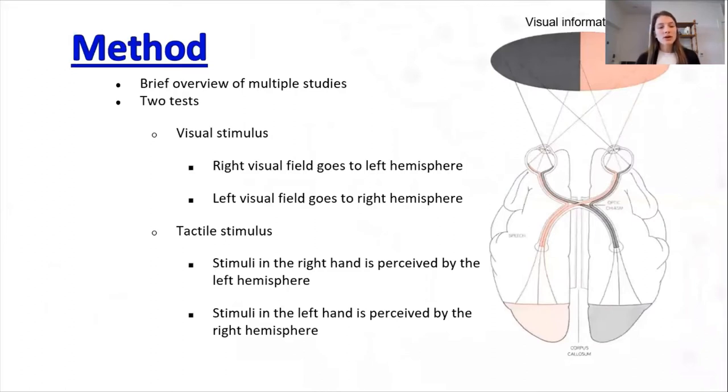So before I talk about these methods, it's important to note that for a visual stimulus, the right visual field goes to the left hemisphere, while the left visual field goes to the right hemisphere, as shown in the picture on the slide. And for a tactile stimulus, the stimuli in the right hand is perceived by the left hemisphere, and the stimuli in the left hand is perceived by the right hemisphere.